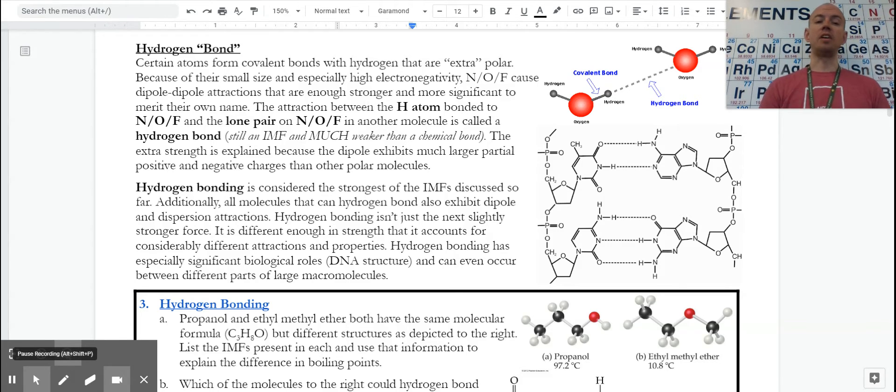But it is not the only kind of IMF that a molecule would exhibit. If it has or can exhibit hydrogen bonding, it has to be polar, so it also has dipole-dipole. It also is a molecule. Therefore, it has dispersion.